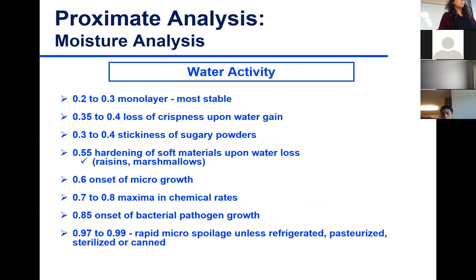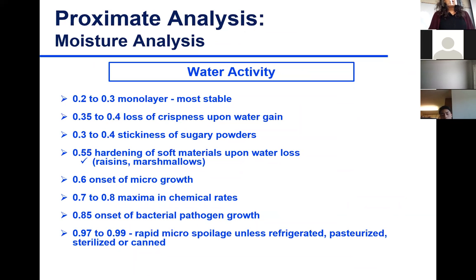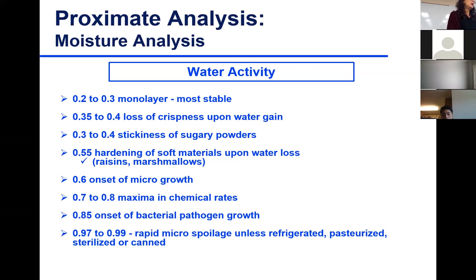Things to remember about water activity: at 0.2 to 0.3 — around the monolayer — you have the most stability for most foods, with minimal reaction rates and no microbial growth. With higher moisture content, you start losing crispiness upon water gain, and at particular temperatures you may approach the glass transition temperature. The higher the moisture content, the lower your glass transition temperature.